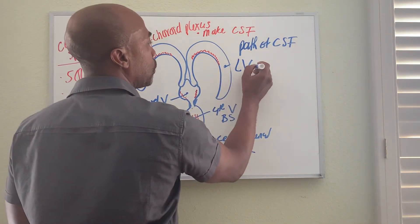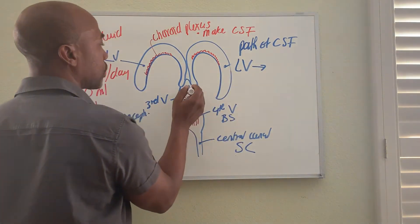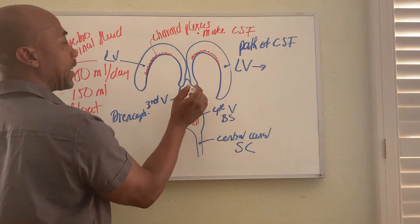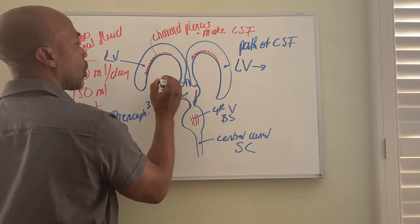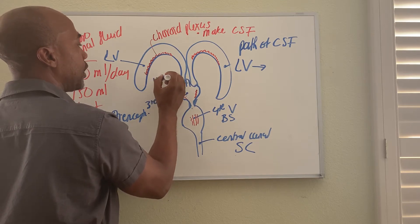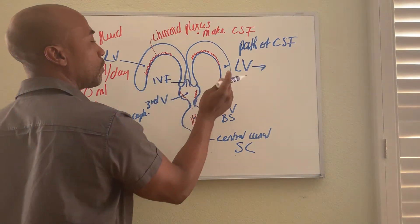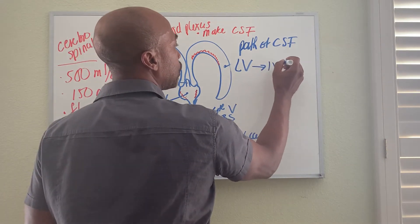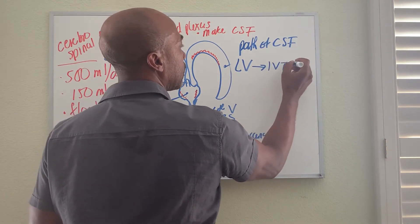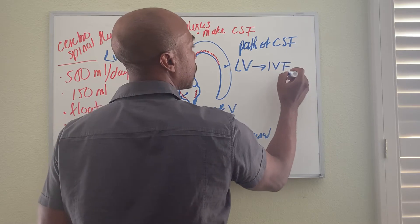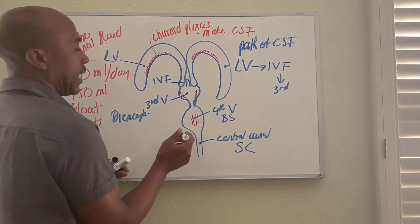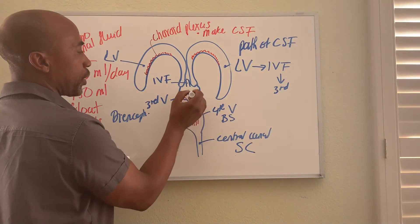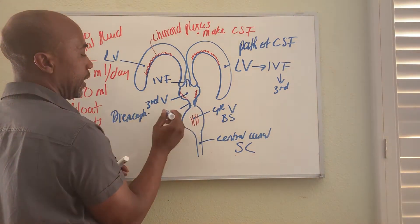It flows through an opening, the bridge between the lateral ventricle and the third ventricle. Here's an opening here called your interventricular foramen. So it flows from lateral ventricles through the interventricular foramen to enter the third ventricle.